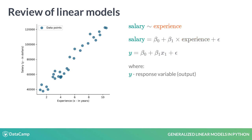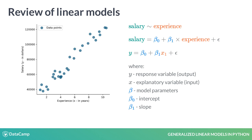Here, y is the continuous response variable, x the explanatory variable, betas are fixed unknown parameters that we estimate, where beta 0 denotes the intercept and beta 1 is the slope, and the random term epsilon measures how much of the variation in the response is not explained by the explanatory variable.